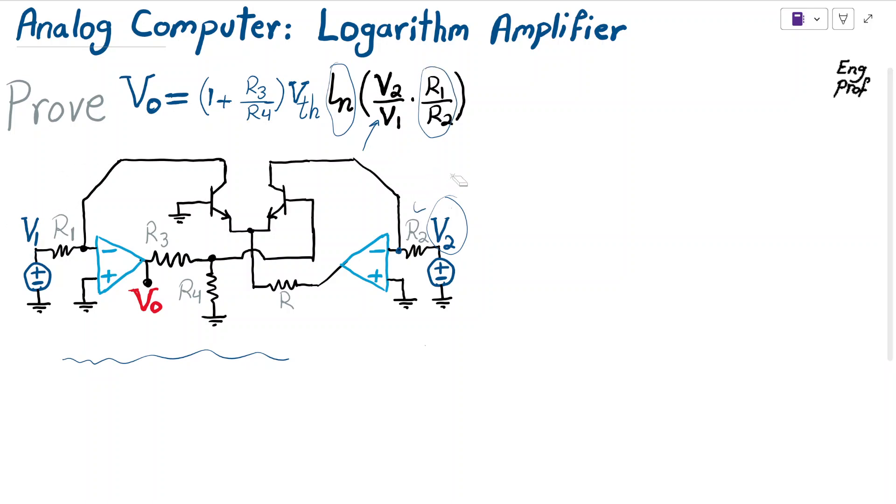It's a very interesting computer in terms of logarithmic amplification. To find why and how this works, let's assume that op-amps 1 and 2 are both properly biased with positive and negative supply voltages applied and they are in the linear region.